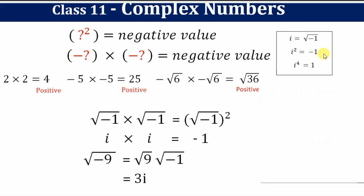Coming back to complex numbers: a complex number is a combination of a real number and an imaginary number. The standard form of a complex number is z = a + bi. Note that a + bi and a + ib are one and the same, so this is the standard form of complex numbers.